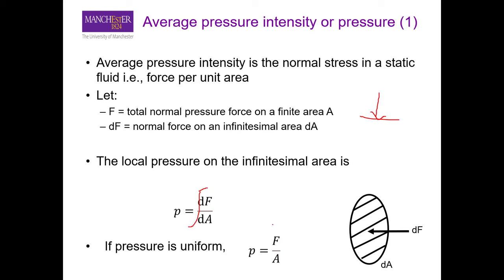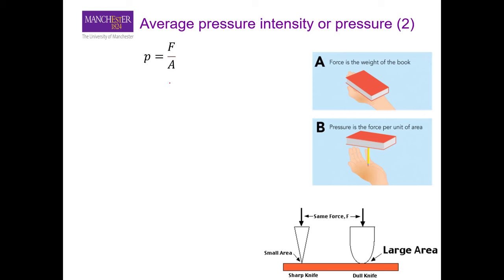Pressure is the force per unit area, and importantly, A is the contact area. For example, if you place a book on your hand, you experience some pressure. But if you balance that same book on a pencil, you exert roughly the same force yet feel much more pressure, because placing it on a pencil significantly reduces the contact area. That is why you feel much more pressure in situation B compared to situation A.